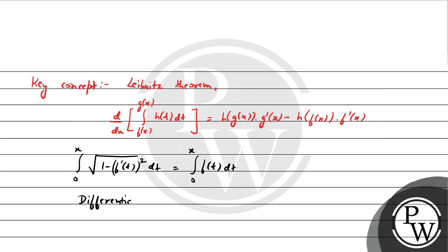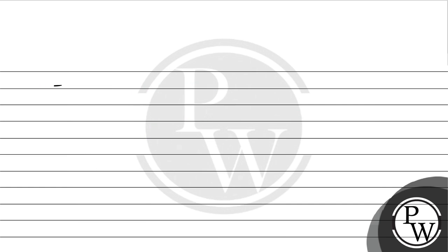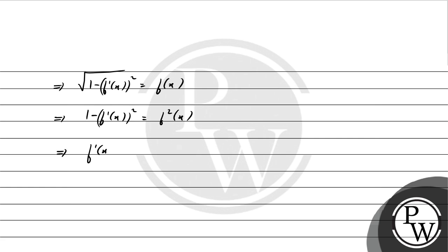तो हमें मिलेगा: upper limit 1 और lower limit का derivative 0 — यह 0 बनेगा। Right-hand side पर t की जगह x put करने पर f(x) मिलेगा times derivative of 1। तो इससे मिलता है: √(1 − (f'(x))²) = f(x)। Squaring दोनों तरफ: 1 − (f'(x))² = f²(x), which implies (f'(x))² = 1 − f²(x)।